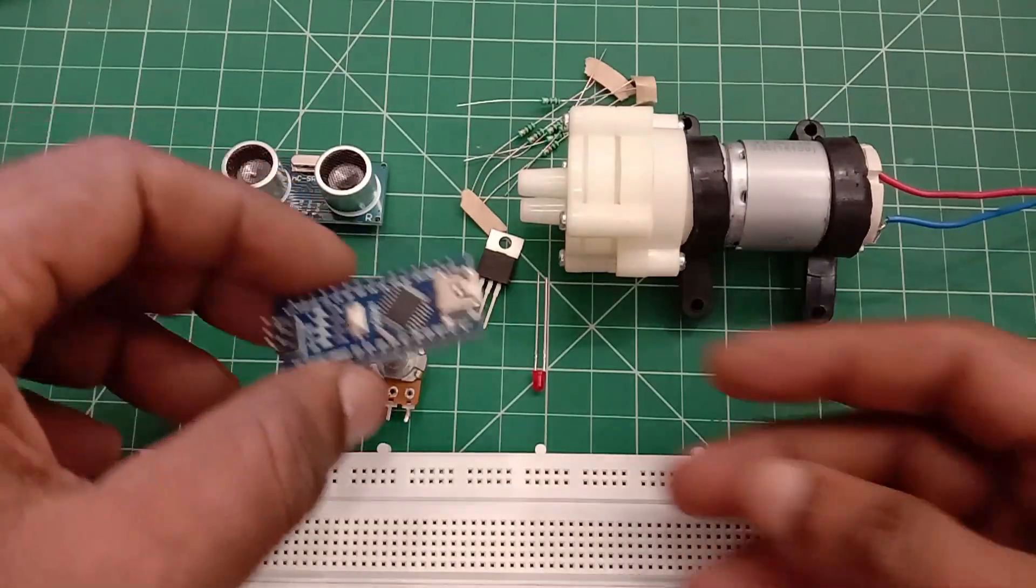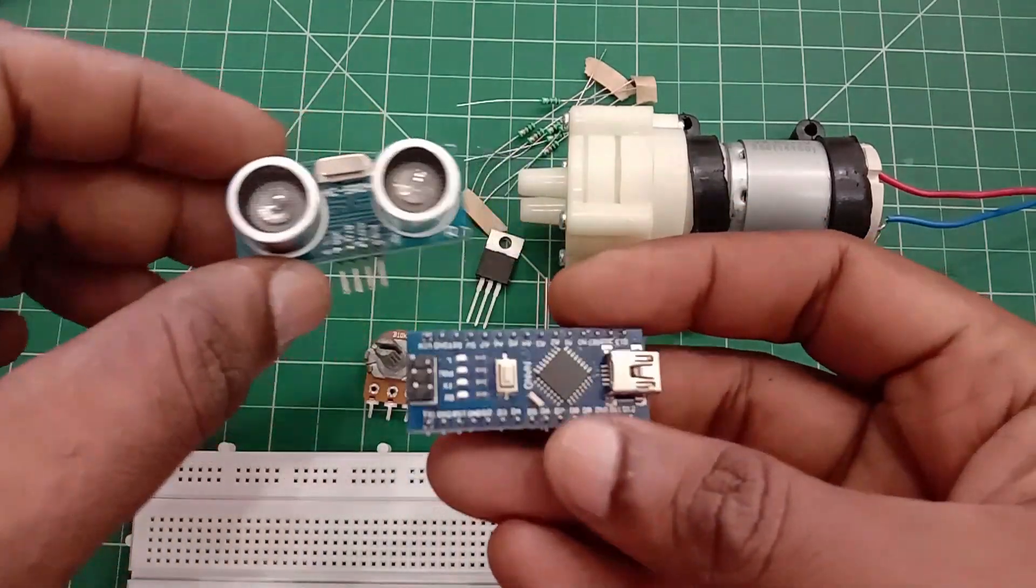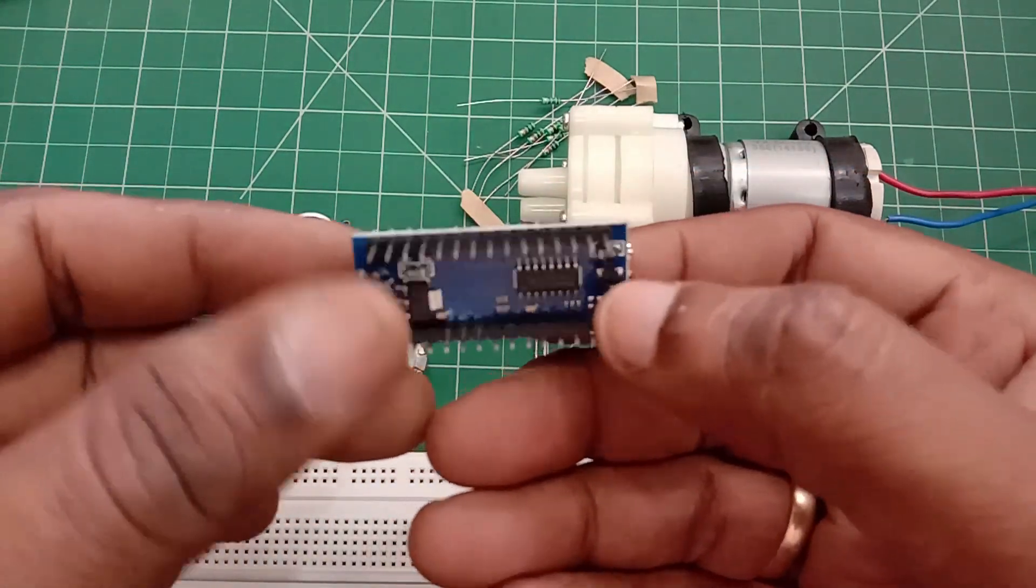For microcontroller we will be using Arduino Nano. Arduino Nano is built on ATmega328 IC and the UART chip used here is CH340 as it is a clone module. You have to install the driver for CH340.